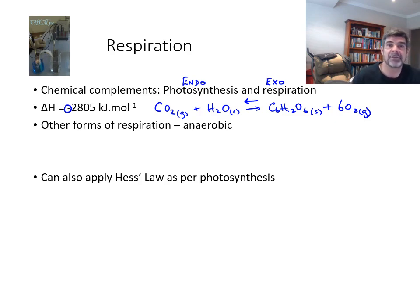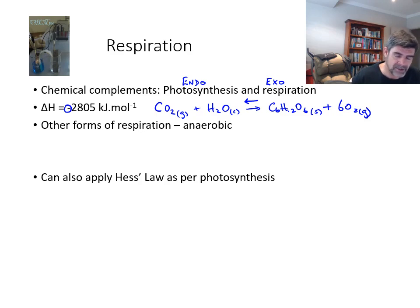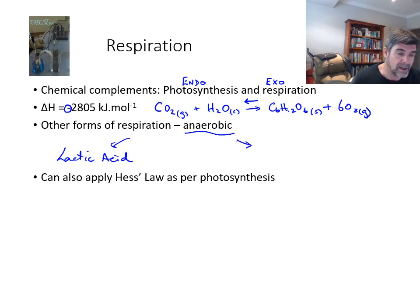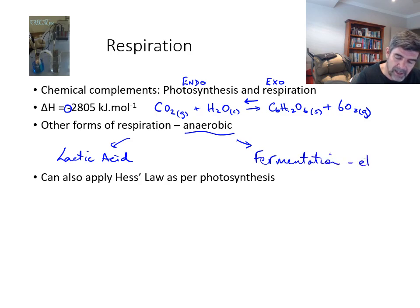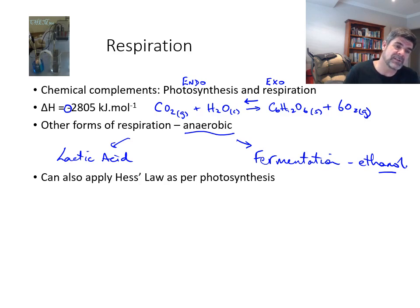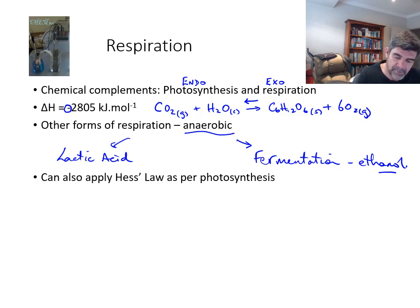So that makes it a little bit redundant for us to go through the same process again and look at how respiration can be calculated using Hess's Law. But fortunately — or unfortunately, depending on how you look at it — there are other types of respiration. Anaerobic respiration, for example, is something that occurs for the production of lactic acid when the muscles of our bodies are a little oxygen starved, and also for things like fermentation, which leads to ethanol as a product. These are also examples of anaerobic respiration and are not the same processes as aerobic respiration or the reverse of photosynthesis. So that means we can also apply Hess's Law to the process of fermentation.